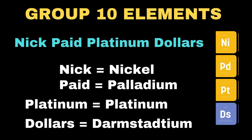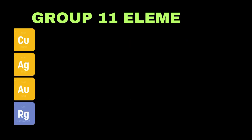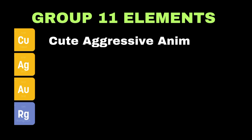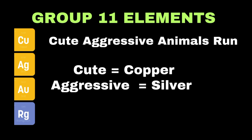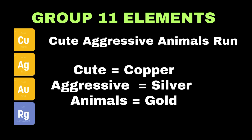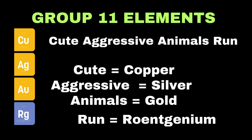Moving towards group 11, my trick to remember their names is: 'Cute aggressive animals run.' Here 'cute' is used for copper, 'aggressive' is used for silver (symbol Ag), 'animals' refers to gold (symbol Au), and 'run' refers to roentgenium (symbol Rg).